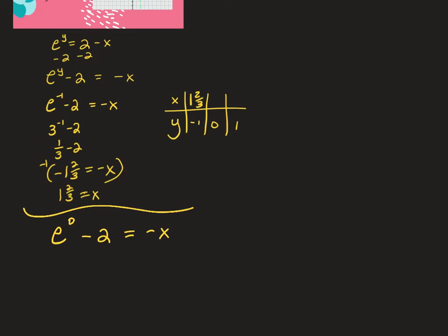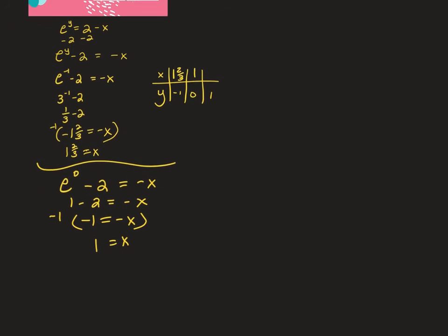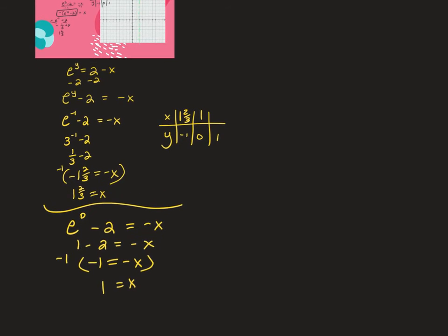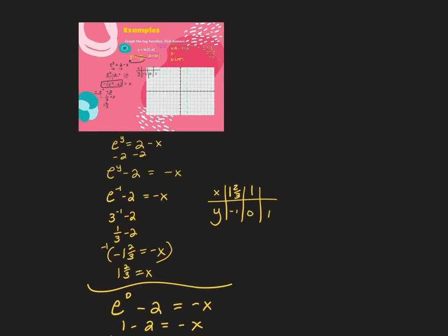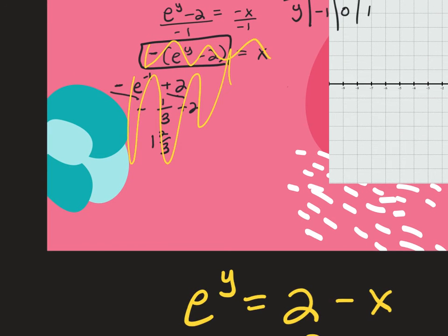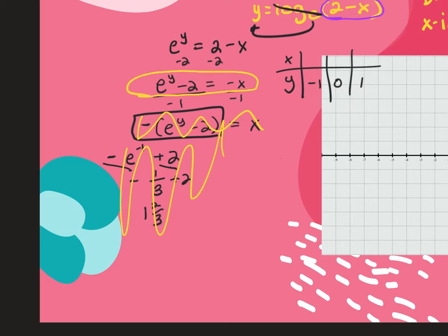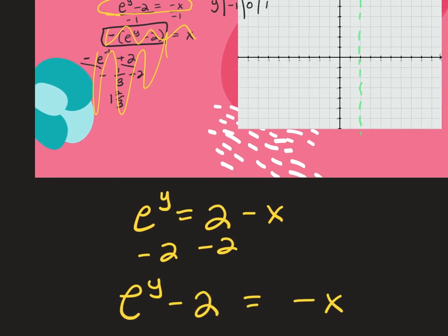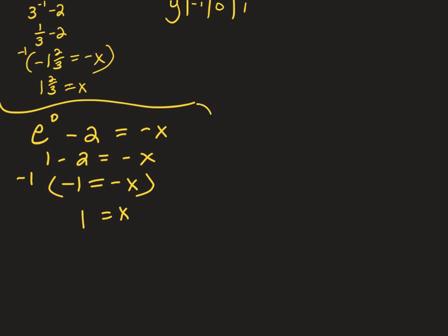For e to the 0 minus 2: e to the 0 is 1, so 1 minus 2 equals negative 1 equals negative x, meaning x equals 1. I'm saving the negative sign for the end to avoid confusion. For the other approach, negative 1 plus 2 equals x, which is also 1. Same answer either way.